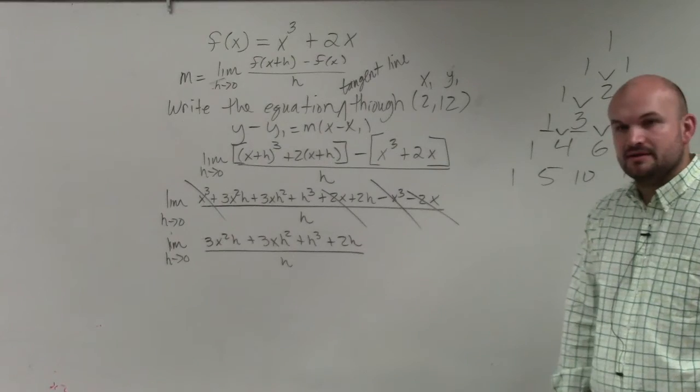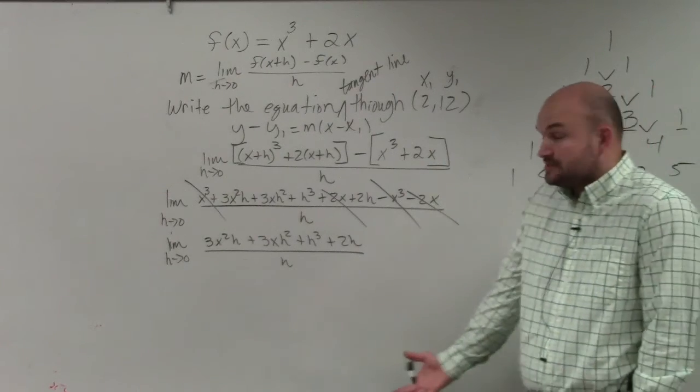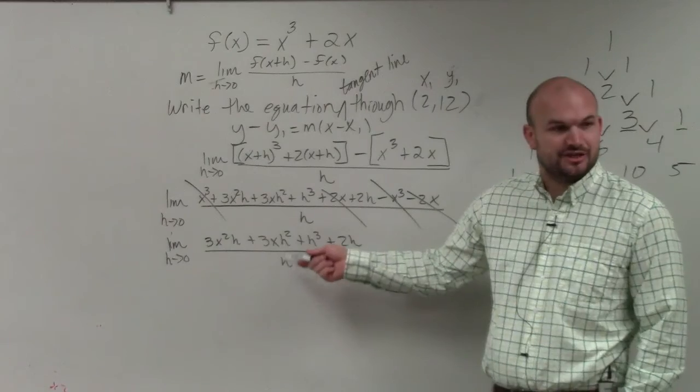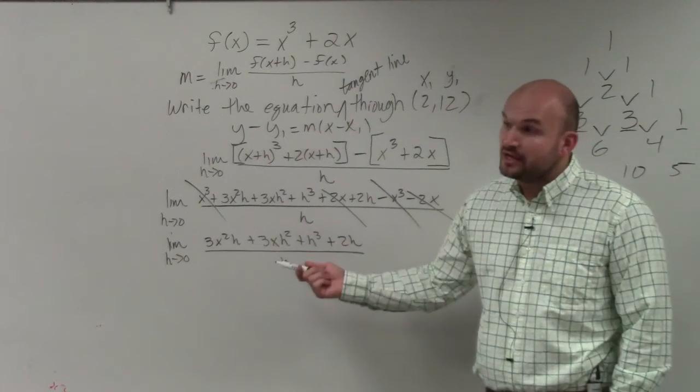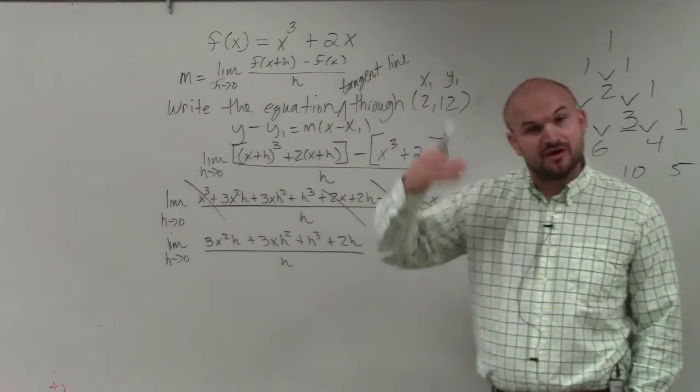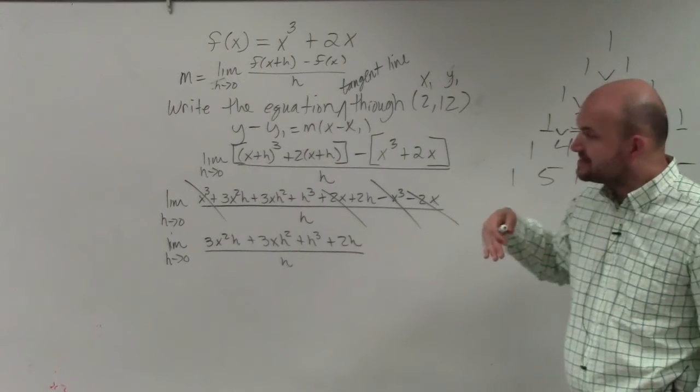Now, again, we still can't evaluate this. We need to somehow get this h out of there, right? Well, we can always do that. Think of the division property. Whenever you have a value divided by itself, that equals 1. Well, even though this h is, you can see this h is divisible into all of these.